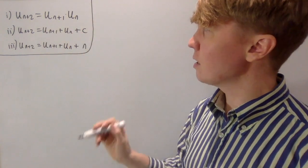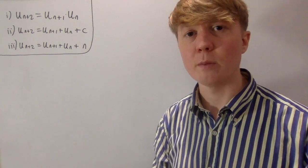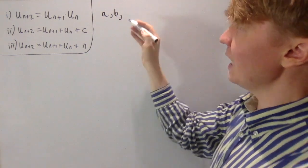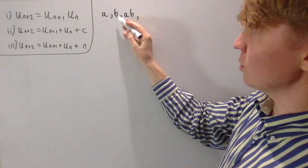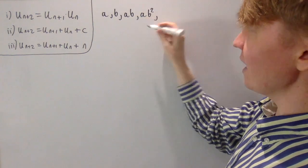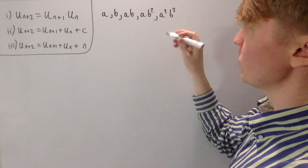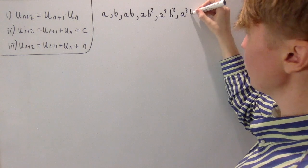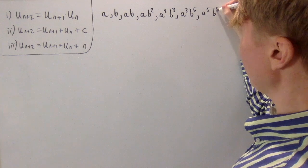For our first example, instead of adding the previous two terms in your sequence to generate the next one, you multiply them. So if your sequence starts off with a and b as your first two terms, then the next term is just the product a times b. To get the next one you do b times ab, so you get ab squared. Then you get b to the power of 3, and a times a squared gives you a cubed, and b squared times b to the 3 gives you b to the 5. Next up is a to the 5, b to the power of 8.